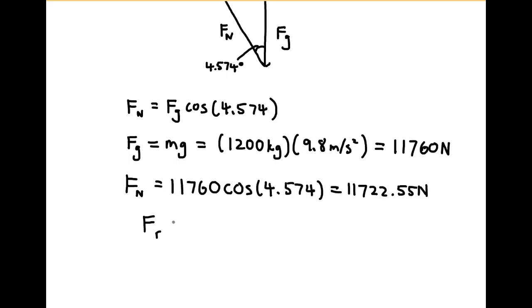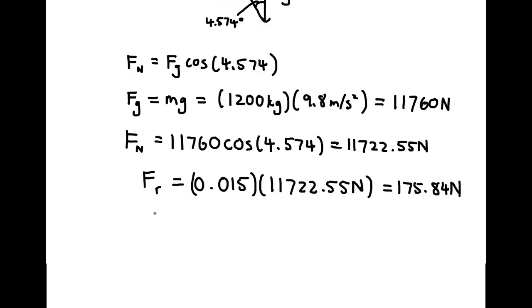Now that we have the normal force, we can then use that to calculate the frictional force. Since we are given the coefficient of friction, the frictional force is then equal to 0.015 times the normal force, FN. Now that we have the frictional force, we can finally calculate the work done by rolling friction.